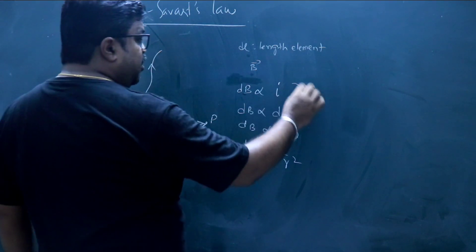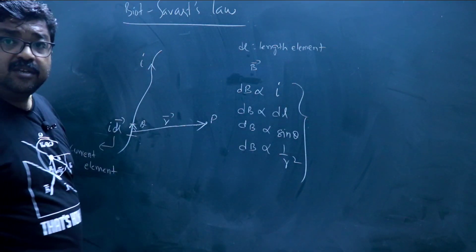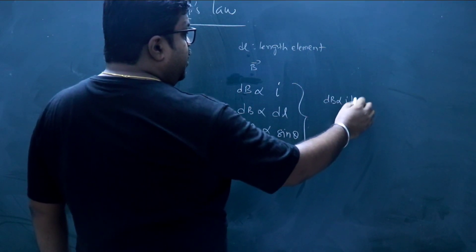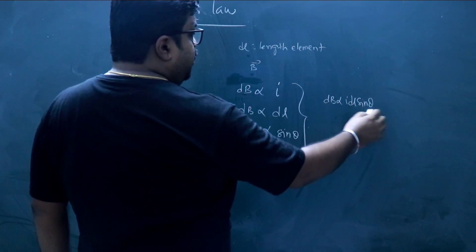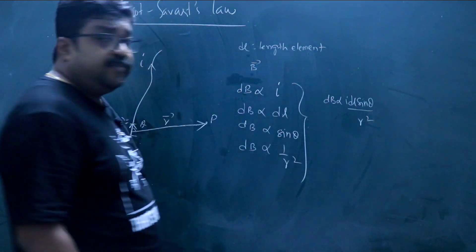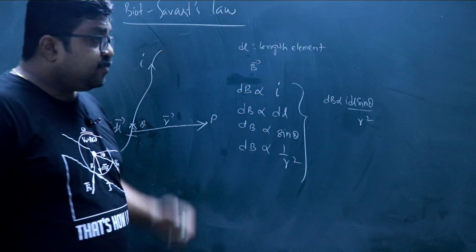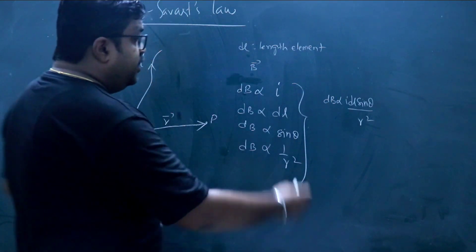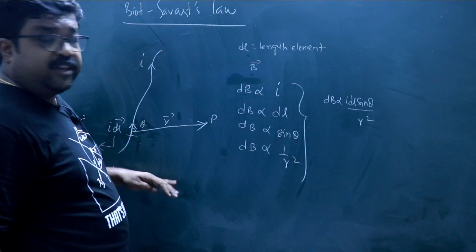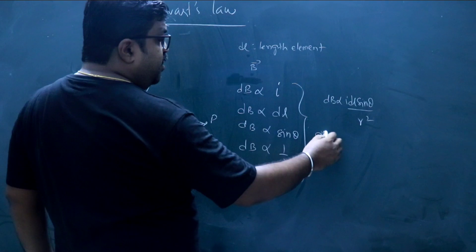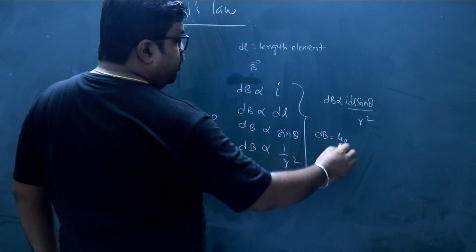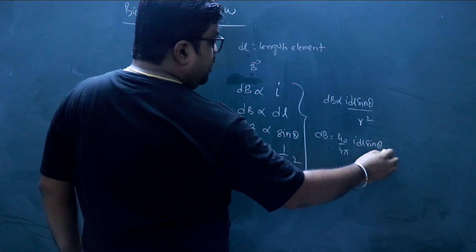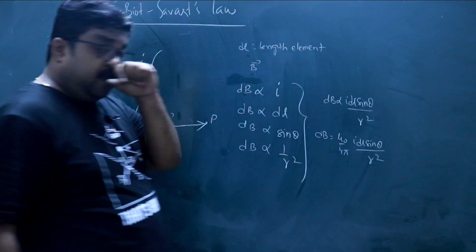Combining all these conditions, we get: dB is proportional to i·dl·sinθ / r². Removing the proportionality symbol for free space or vacuum, this becomes dB = μ₀/4π · i·dl·sinθ / r².